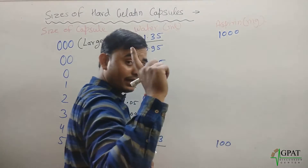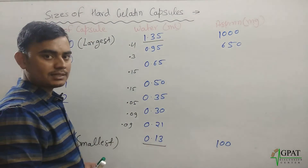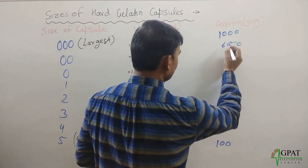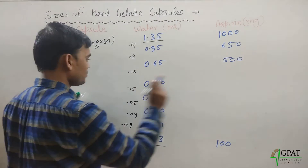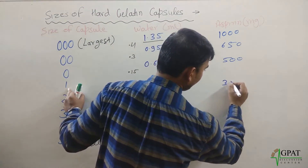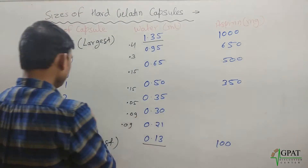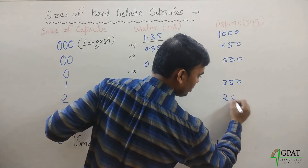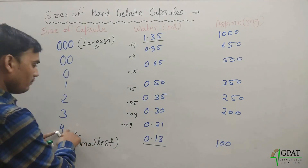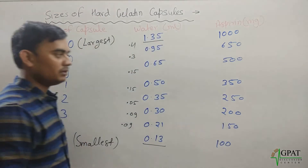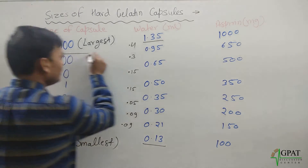The aspirin fill values for each size are as follows: triple zero = 1000 mg, double zero = 650 mg. In number one capsule, the amount is variable — sometimes 320 or 350 mg, we will use 350. In number two: 250 mg. In number three: 200 mg. In number four: 150 mg.